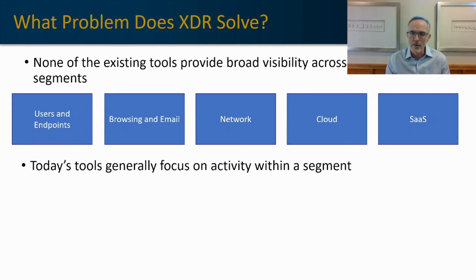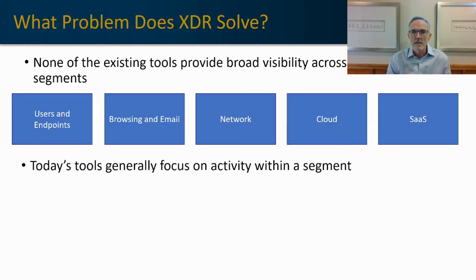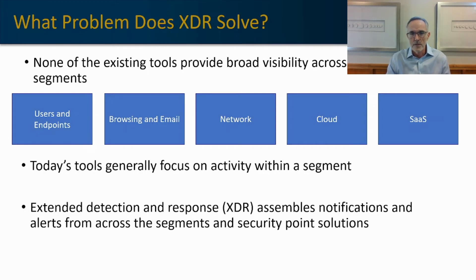For example, with a SIEM it's very rare that you're going to have correlations written between your email security platform and your cloud platform, because generally threats don't flow from email to cloud, at least not directly. But XDR recognizes that you do have to take note of those activities when something appears on email and might find its way into a cloud environment. It looks across all of the segments and tries to establish trends, patterns, and the entire context of an incident, and delivers that back to the security engineer.